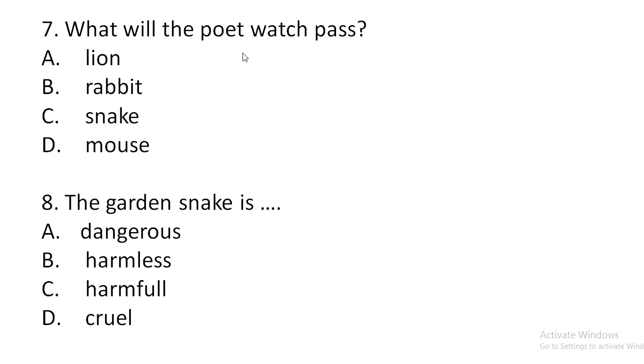What will the poet watch pass? Lion, rabbit, snake, mouse. The answer is snake. The poet will watch the snake pass by. When the poet first sees the snake, he gets scared, but when his mother tells him that this kind of snake is not harmful, the poet wishes to watch them pass, to see them moving.